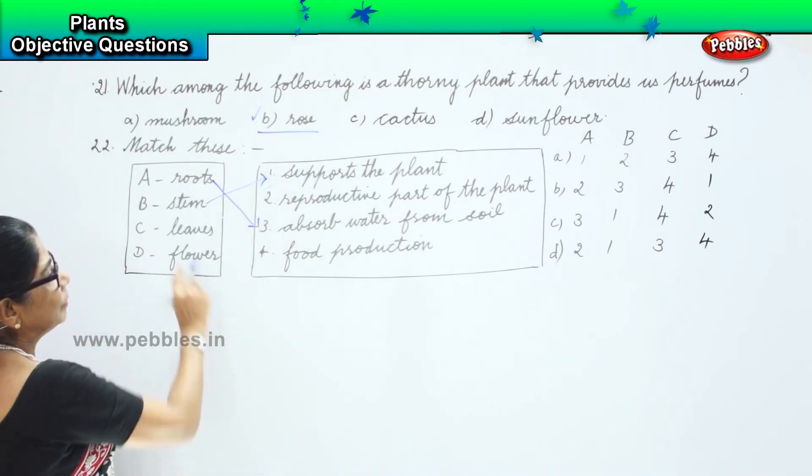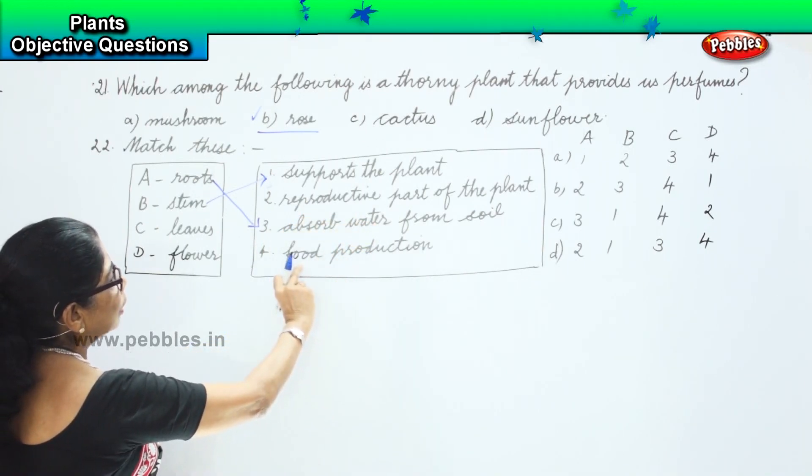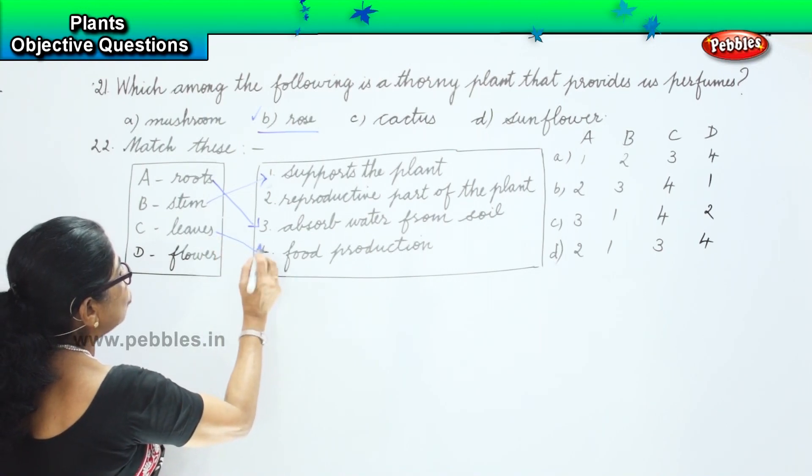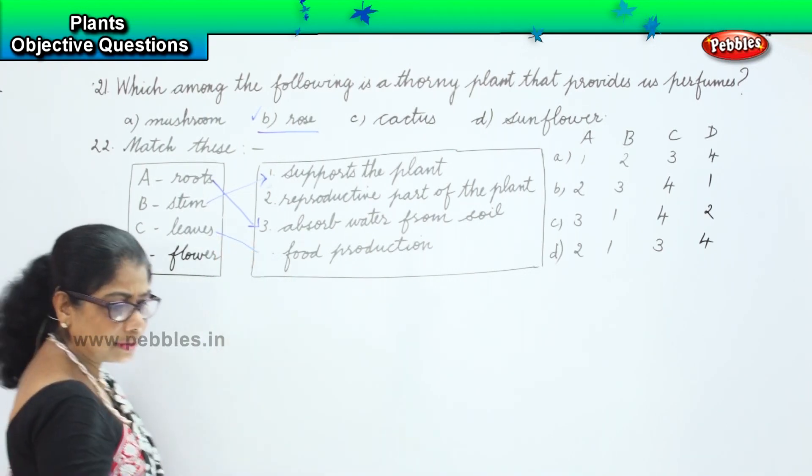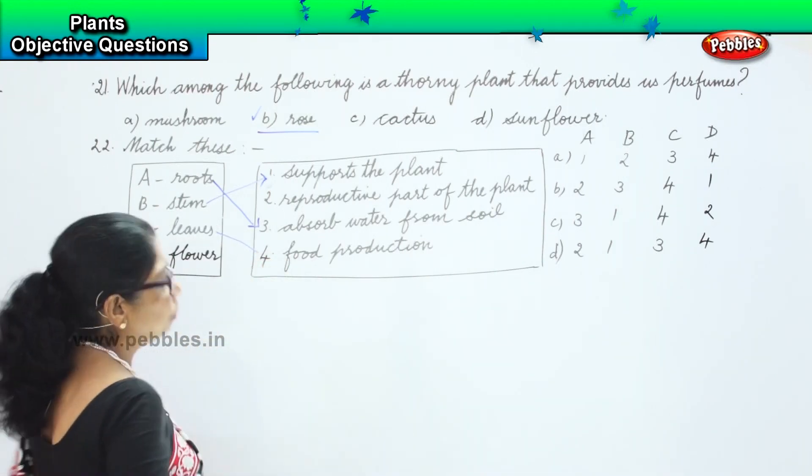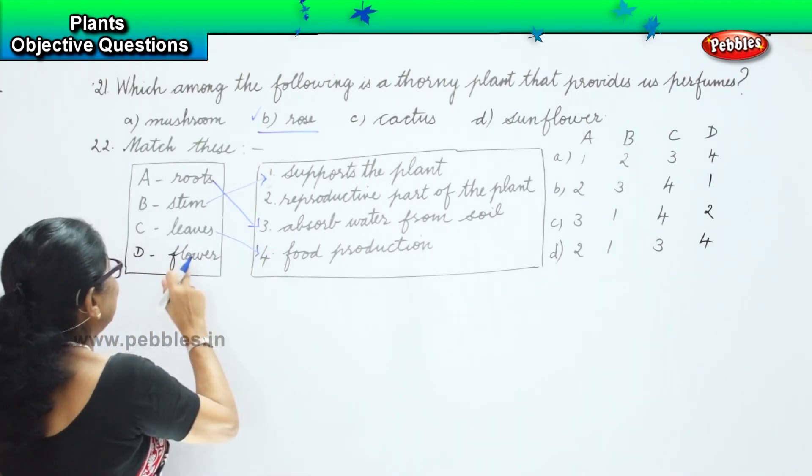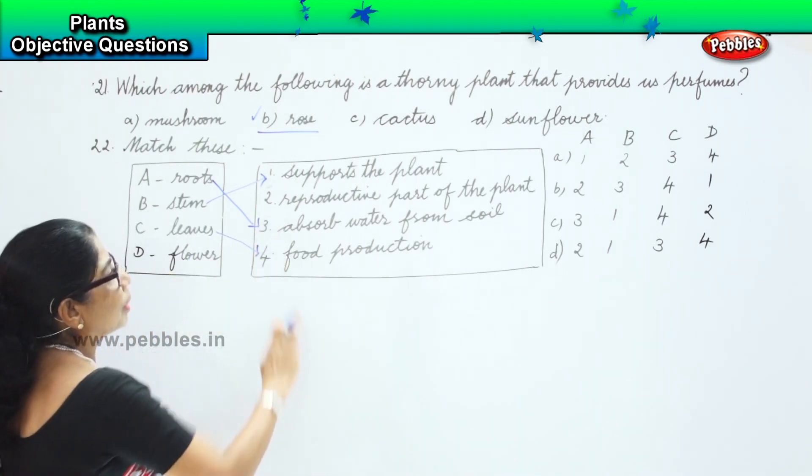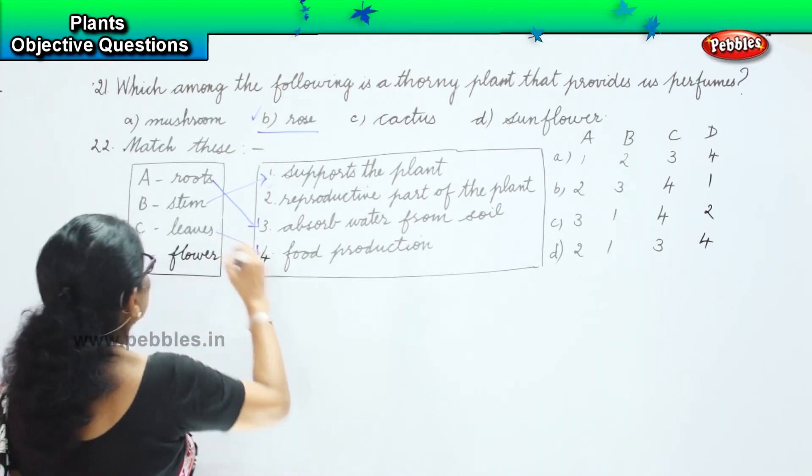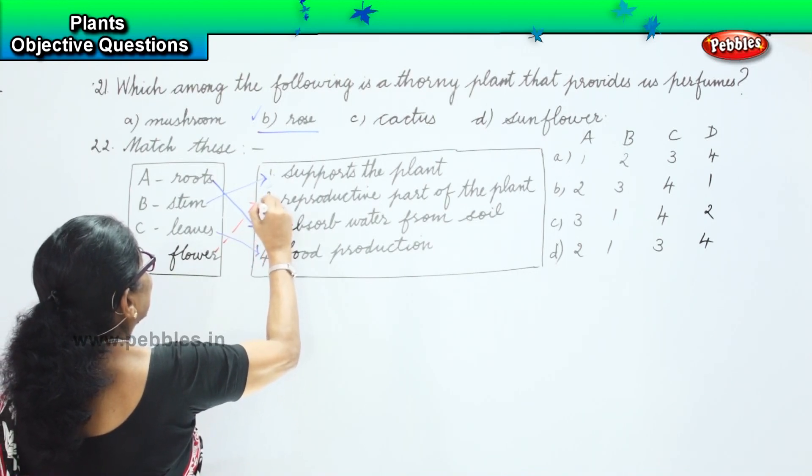Leaves, reproductive part of a plant? No. Food production. Leaves prepare food. They prepare food, so food production is done in the leaves. And finally, flower, the reproductive part of a plant. Flower is the reproductive part of a plant.